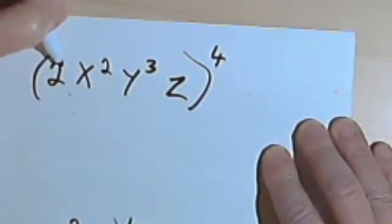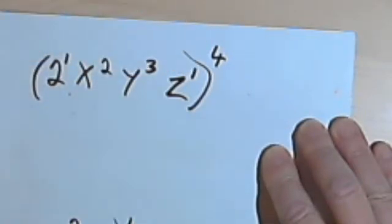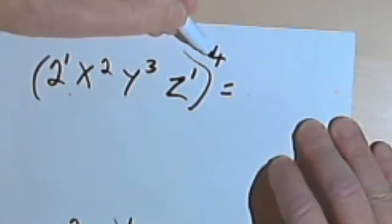The 2 doesn't have an exponent, and neither does the z. But remember, if you don't see an exponent, that means the exponent is 1. So this is going to become 2 to the first, and this 1 is going to be multiplied by 4, so it's going to be 2 to the fourth.